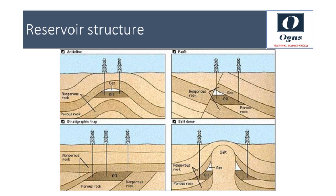An anticline, the most common type of oil and gas reservoir, is a type of fold that has an arch-like or dome shape, caused by the pushing up of rock strata due to tectonic activity. If there is a layer of impermeable rock present in this dome shape, then hydrocarbons can accumulate at the crest. So the wells are drilled at the crest of the rock strata.